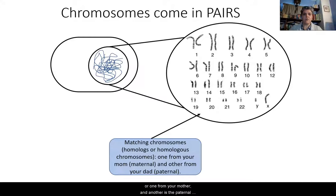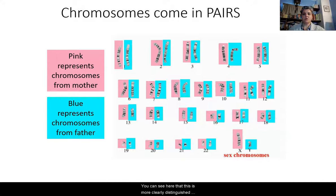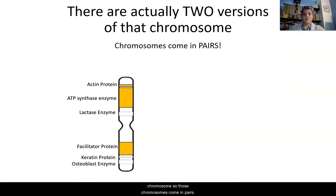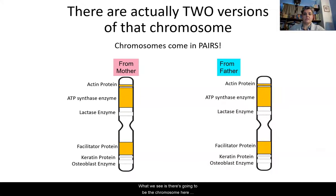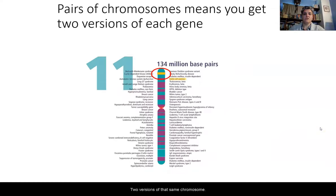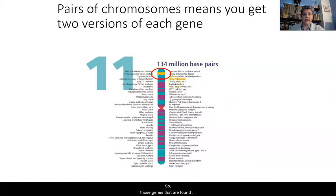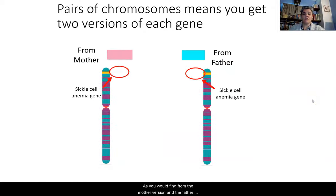There is one maternal — one from your mother — and another is the paternal chromosome, or one from the father. You can see this more clearly distinguished with the colors: pink represents chromosomes from the mother, and blue represents chromosomes from the father. So two versions of each chromosome come in pairs — one from the mother and one from the father. We see an example of this specifically with chromosome 11, which is where we find the trait of sickle cell anemia. So those genes found on that chromosome are the same genes you would find from the maternal and paternal versions.